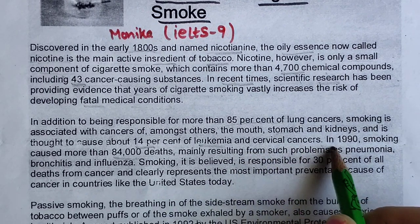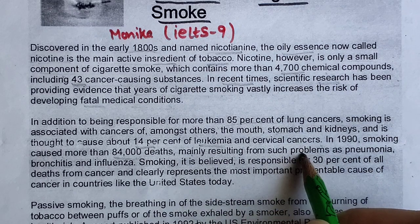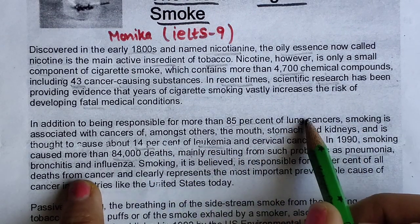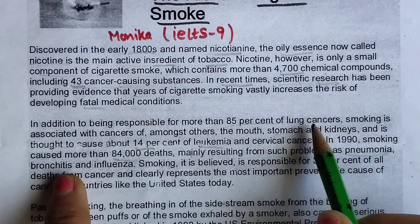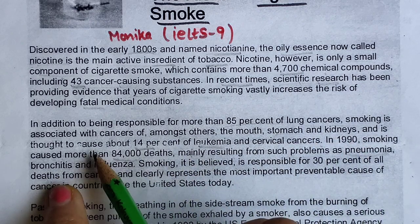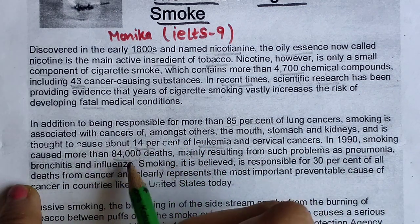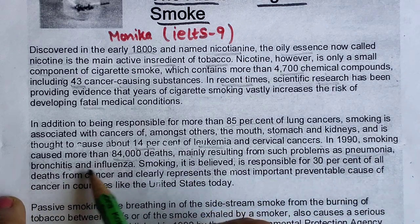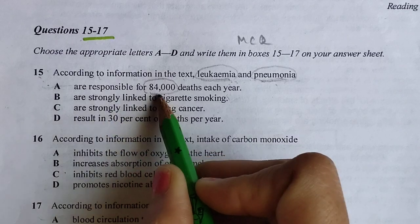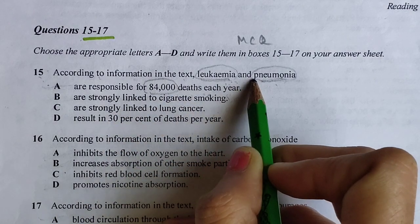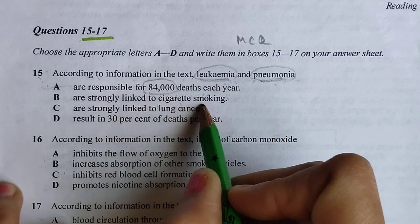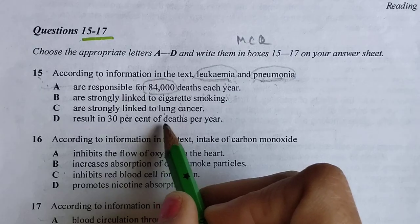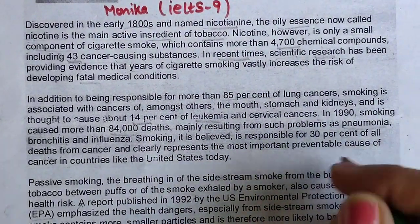The text also mentions 14% of leukemia cases. Smoking caused more than 84,000 deaths, mainly resulting from problems like pneumonia, bronchitis, and influenza. Let's read the options: 'are responsible for 84,000 deaths each year' — both are responsible; 'are strongly linked to cigarette smoking' — both are linked to cigarette smoking; 'are strongly linked to lung cancer'; 'result in 30% of deaths per year' — 30% is mentioned.